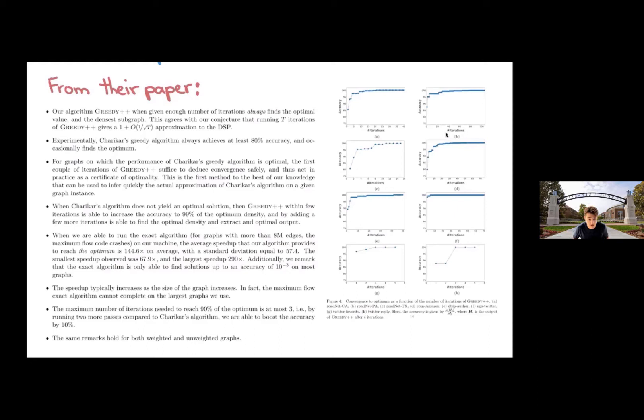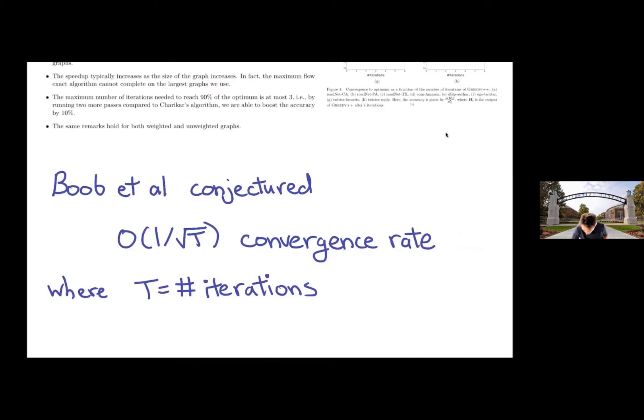And maybe importantly, they had a conjecture. They weren't able to prove it, but they conjectured that in T iterations, you get like a one over square root T approximation. So what I mean is something with density at least one minus one over square root T times optimal. So that's this question that we got interested in.